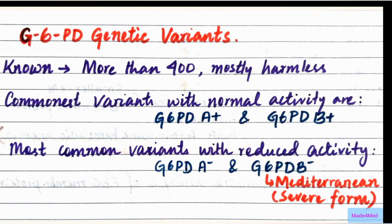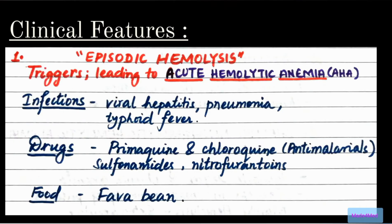There are more than 400 known G6PD genetic variants, but mostly they are harmless. The most common variants with normal activity are G6PD B+ being the most common, then G6PD A+. The most common variants with reduced activity are G6PD A− and G6PD B−. G6PD B− is also called the Mediterranean form and is the most severe form of this disease.